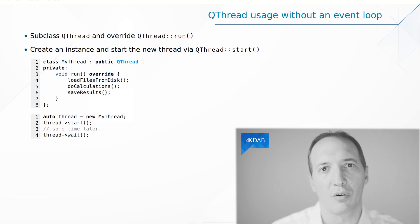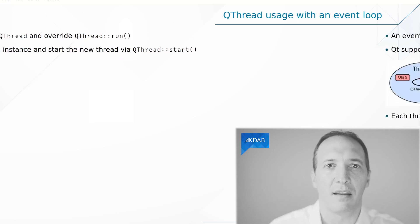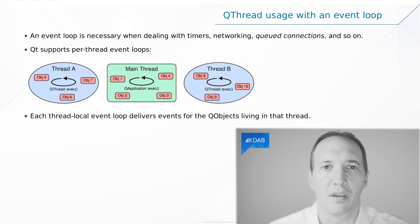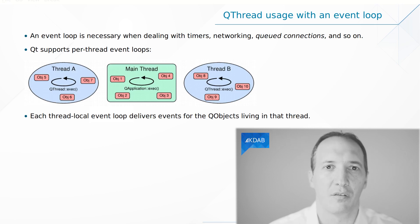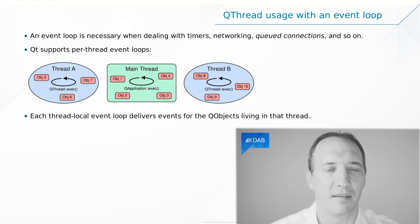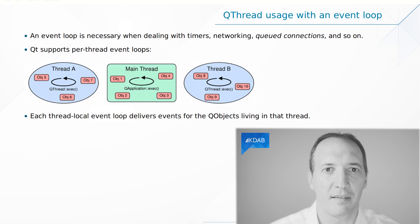In this video, I want to talk more about event loops and event handling. Let's have a look at how it works in Qt. A QObject is always associated to a thread, and that is the thread that handles the events for that object. We can represent it like in this diagram where we have three different threads and we have objects that live in these threads.